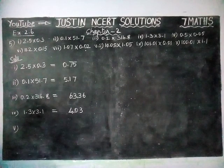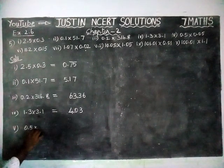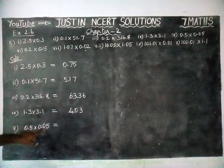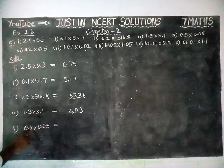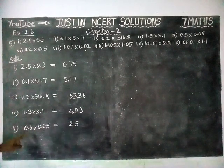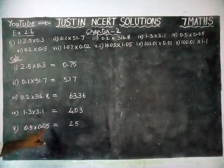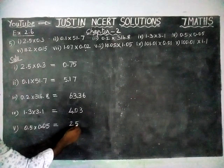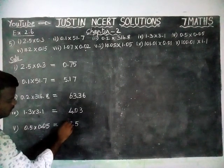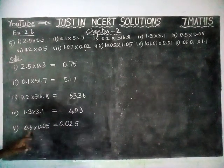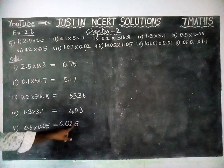Fifth question: 0.5 into 0.05 is equal to. Everything else is 0, so we are going to multiply only the numbers. Five fives are 25. Here we have decimal digits: 1, 2, 3 — totally we need 3 decimal points. So from the right hand side we count 1, 2, and we add another 0. So the answer is 0.025 — we need 3 decimal points: 1, 2, 3 decimal points. 0.025 is the answer for the fifth question.